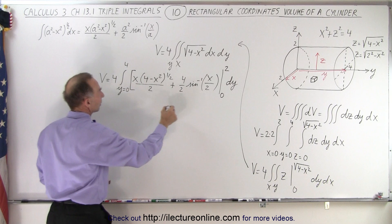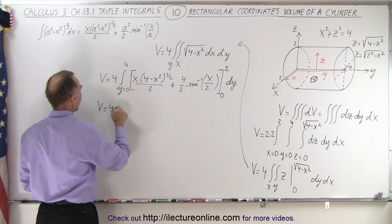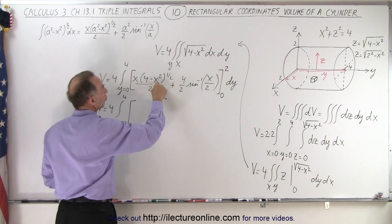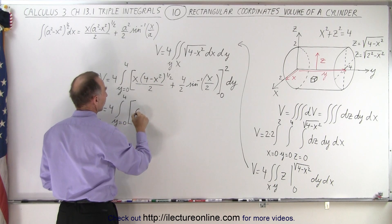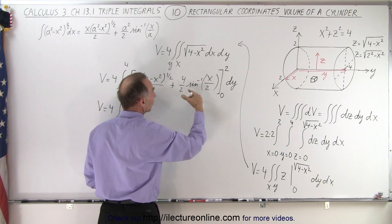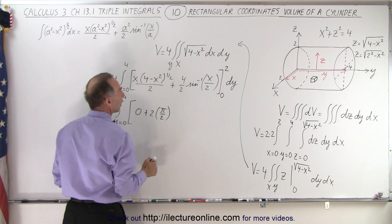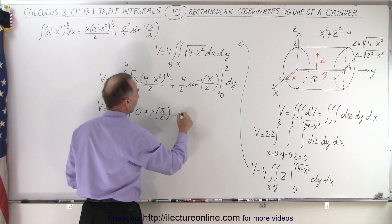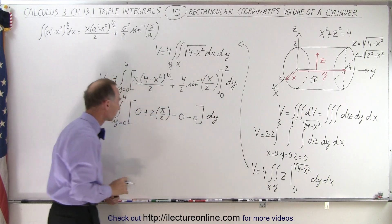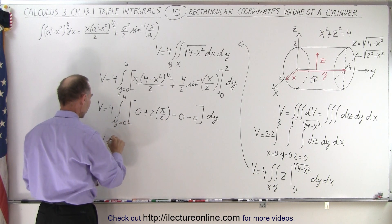We want to evaluate everything from 0 to 2. Plugging in the upper limit x = 2: 2² gives 4, and 4 minus 4 is 0, so the first term is 0. For the second term, 2 over 2 is 1, and the inverse sine of 1 is π/2, giving plus 2 times π/2. Plugging in x = 0 gives 0 minus 0. So the result is 2/2 times π, which equals π, times dy.